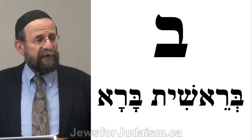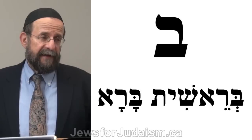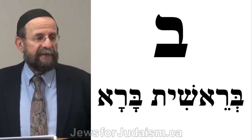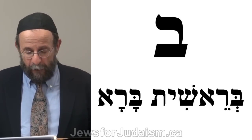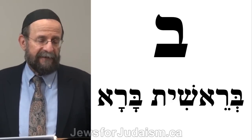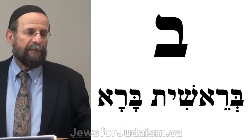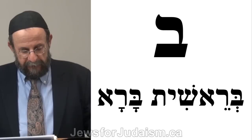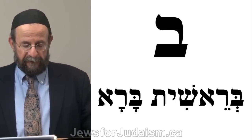It's interesting that the letter Bet is shaped like a house or a room. It's got a floor, it's got a roof, it's got a side, and one side is open because our sages recommend that our homes be open and that we're hospitable. So the letter Bet has this idea of a house, a home.